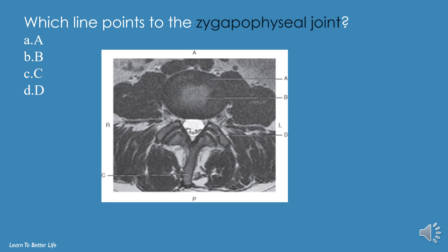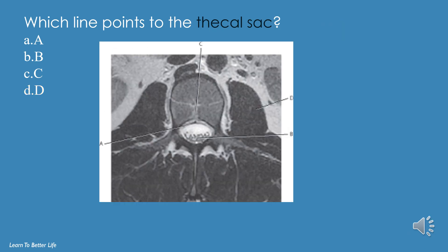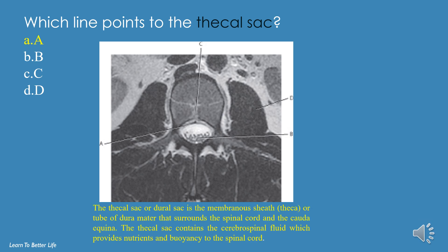Which line points to the zygapophysial joint? A, B, C, or D? The answer is D. Which line points to the thecal sac? A, B, C, or D? The answer is A. The thecal sac, or dural sac, is the membranous sheath or tube of dura mater that surrounds the spinal cord and the cauda equina.